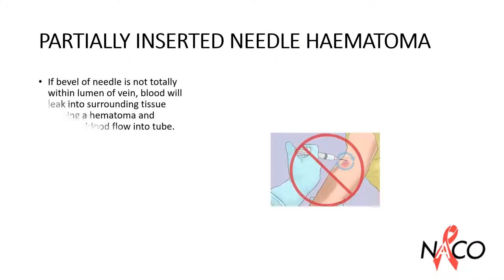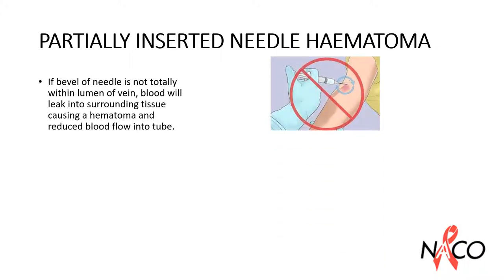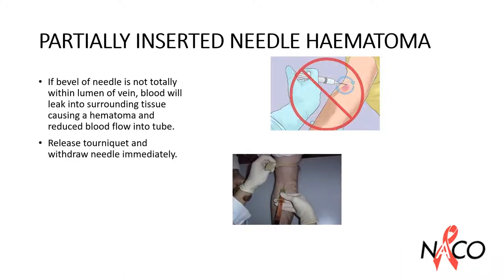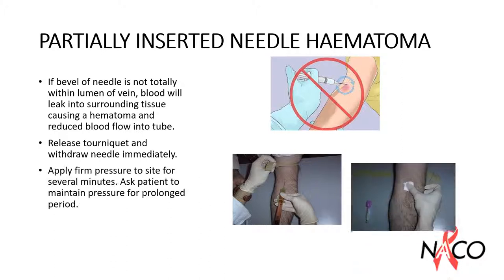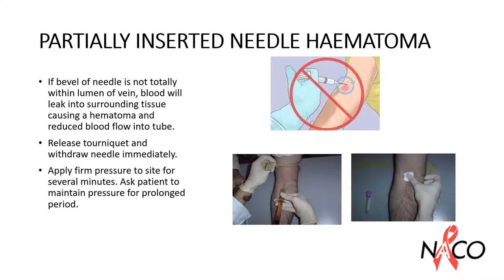If the bevel of the needle is not totally within the lumen of the vein, blood will leak into the surrounding tissue causing a hematoma and reduce blood flow into the tube. Release the tourniquet in such cases and withdraw the needle immediately. Apply firm pressure to the site for several minutes. Ask the patient to maintain pressure for prolonged periods if possible, or request assistance from nursing staff as appropriate.